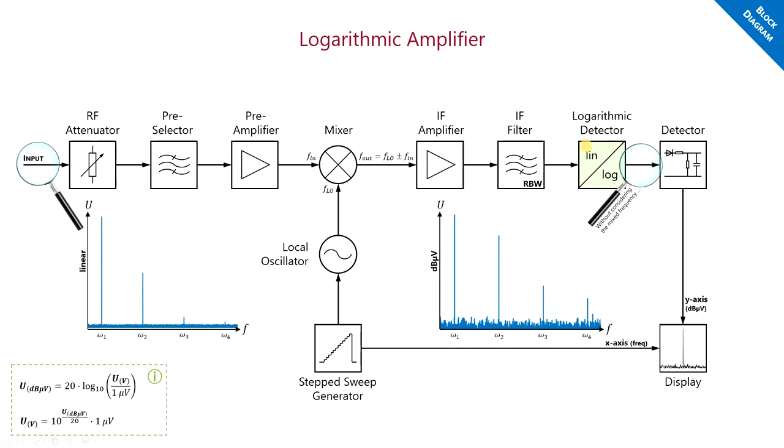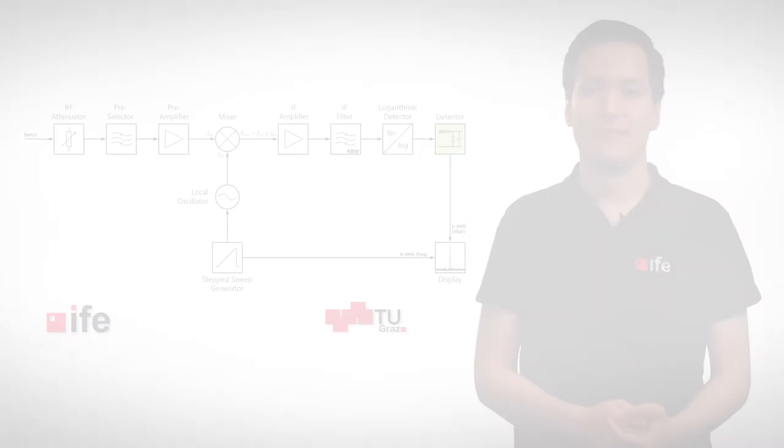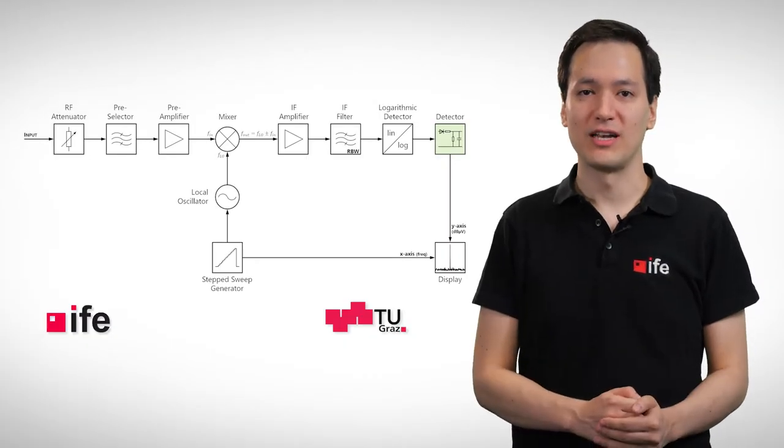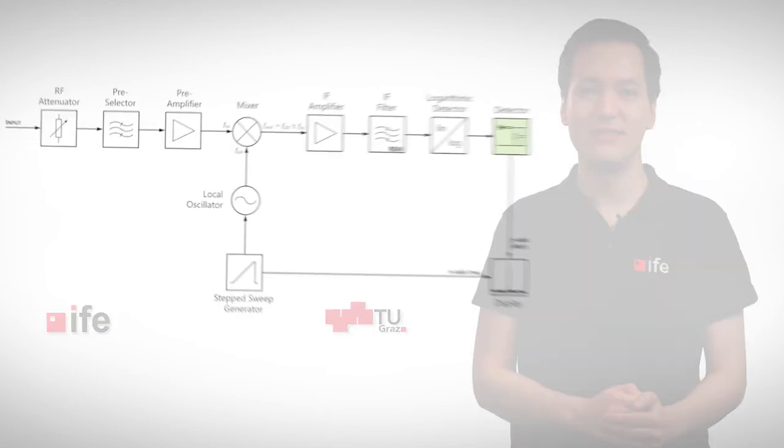This is done by using a logarithmic amplifier. Now, only one important block of our diagram is left, the detector. When handling EMI receivers, we have no video bandwidth, but we can change the detector instead.